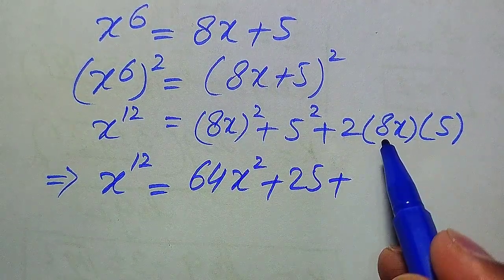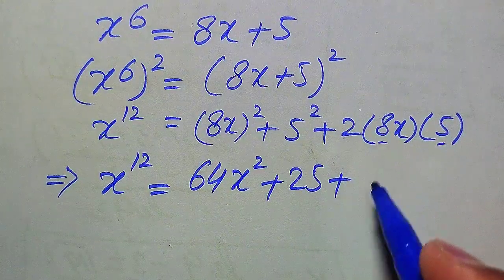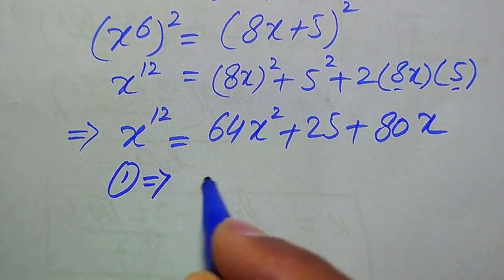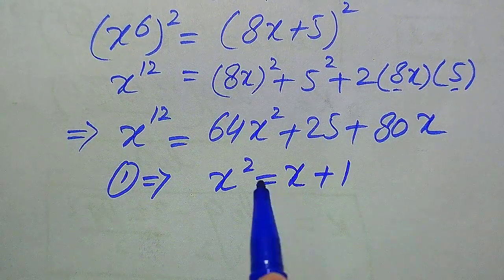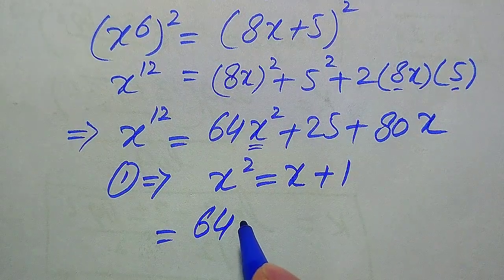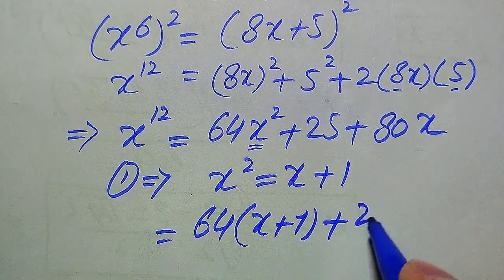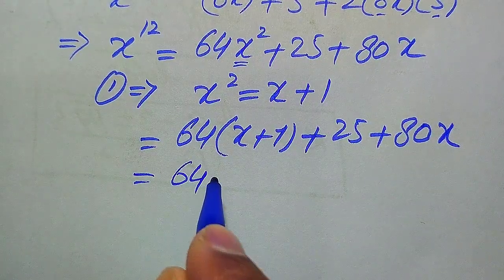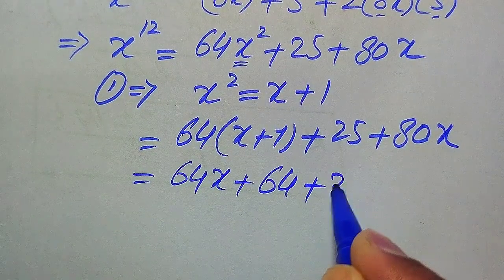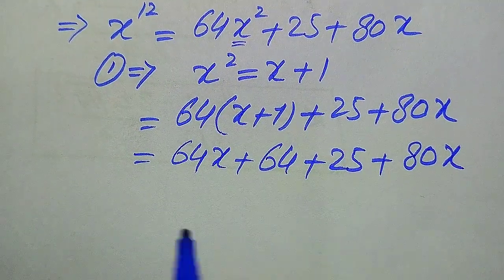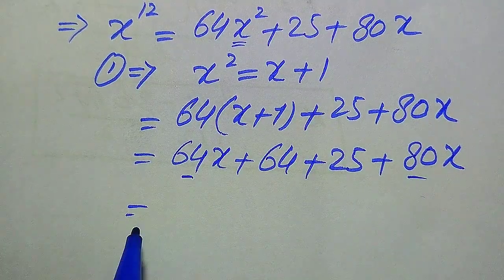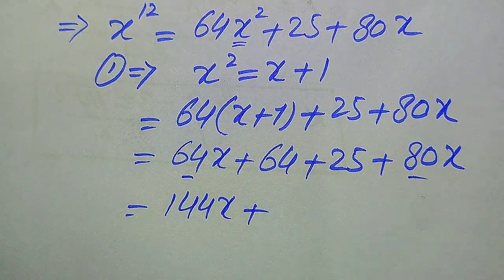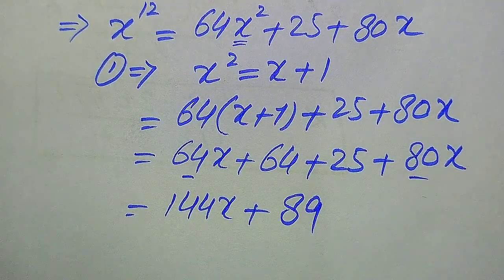So x to the power of 12 equals 64 times x² plus 25 plus 80x. We use Equation 1 again: x² equals x plus 1. Replacing x² with (x plus 1) gives 64 times (x plus 1) plus 25 plus 80x. Multiplying 64 through gives 64x plus 64 plus 25 plus 80x. Summing: 80 plus 64 equals 144x, and 64 plus 25 equals 89. So x to the power of 12 equals 144x plus 89.